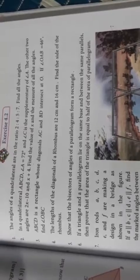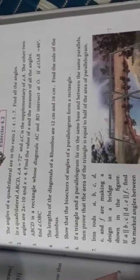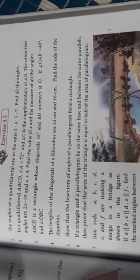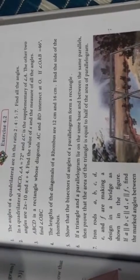Problem 3: ABCD is a rectangle whose diagonals AC and BD intersect at O. If angle OAB is 46 degrees, find angle OBC. The rectangle ABCD is given with diagonals AC and BD intersecting. The given angle is OAB and we want to find angle OBC.